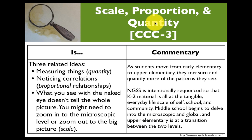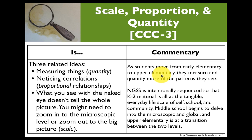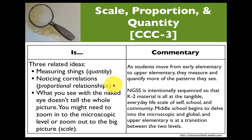Scale, proportion, and quantity are really three related ideas. There's the idea of measuring things — that's quantity. As students move from early elementary to upper elementary, they're starting to measure and quantify more of the patterns that they see — that's a key progression within NGSS. The next aspect is about noticing correlations and proportional relationships, which we don't talk about as much in elementary school.